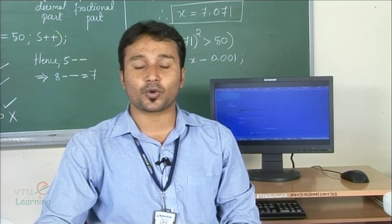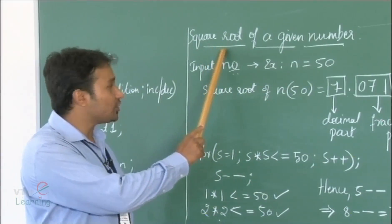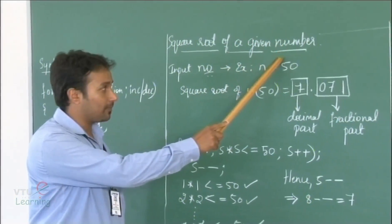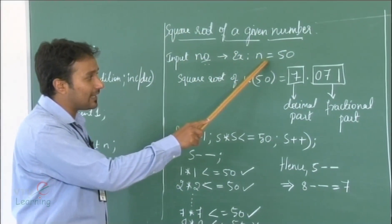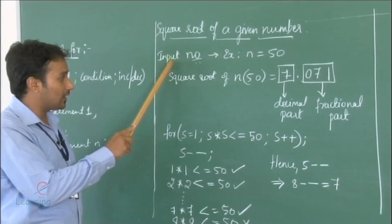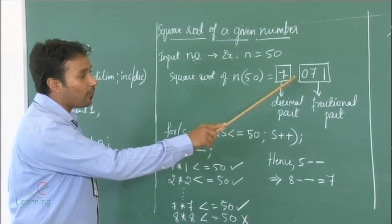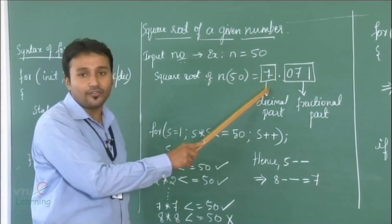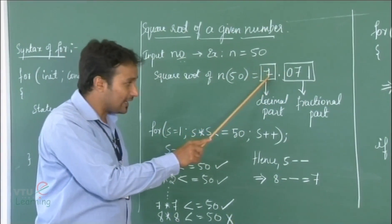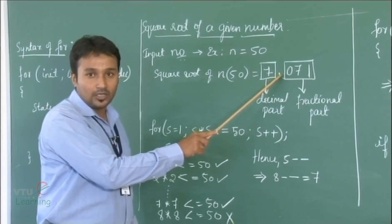Let us look into the logic of the square root of a given number program. Consider the value of n equals 50 as an input. The square root of this number n is equal to 7.071. As we can see in the computed result, we have two parts: one is the decimal part and one is the fractional part, separated by a dot.